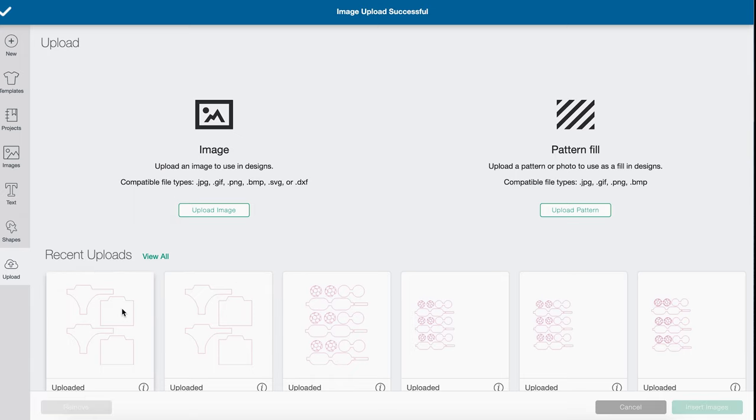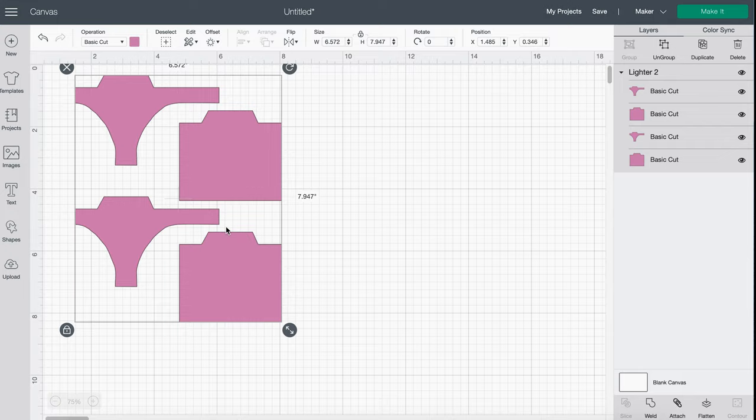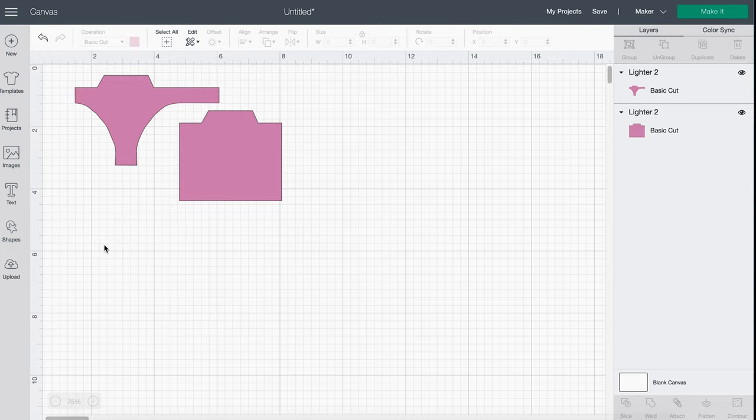Here you can see the file. I'm going to Ungroup and just delete the duplicate. Here you'll see the two pieces of the pattern. This is the base and this is the decorative part that goes on top. You can make them the same color. I'm going to make them different colors and start with the first layer. I'm going to turn off the second layer and go to Make It.